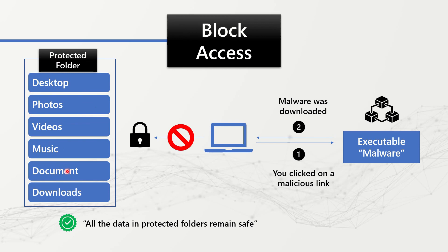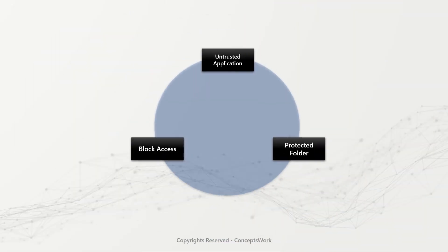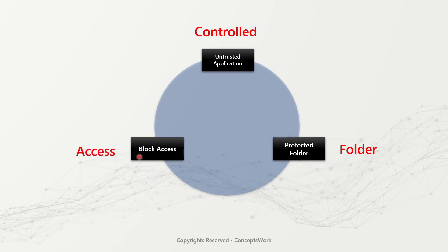So if you combine all three terms, it becomes exceptionally relatable. The first is having a control that verifies if an application is trusted or not. Second, whether the application is allowed to access protected folders. And if the application is not trusted, then block access to protected folders. This is how controlled folder access can protect your data from malicious applications or threats like ransomware.